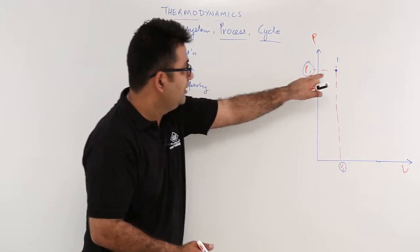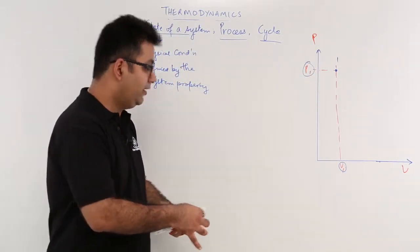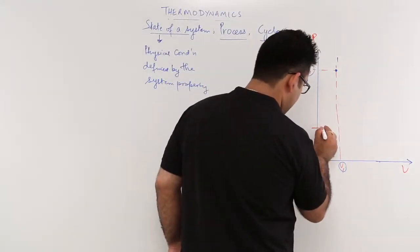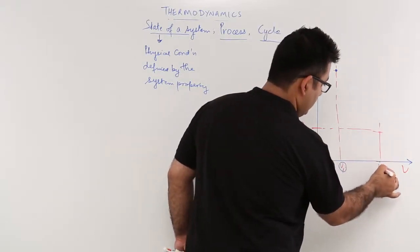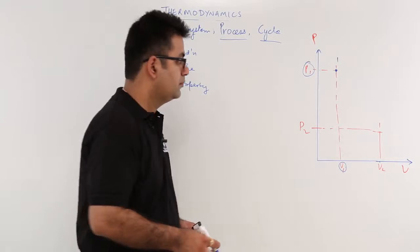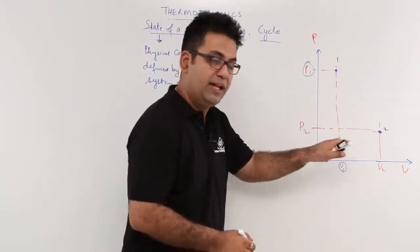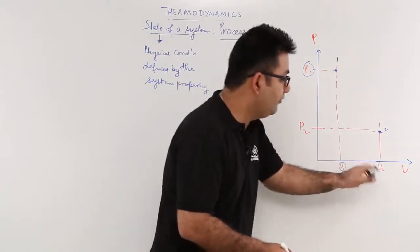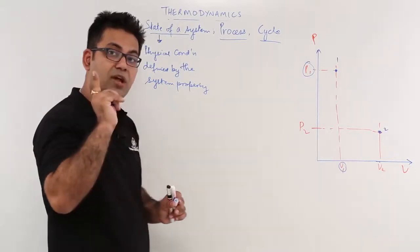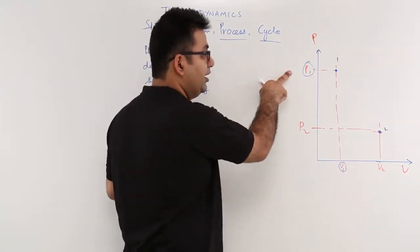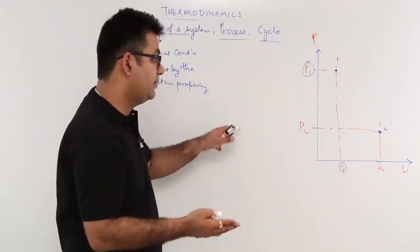That becomes the state of the system. Now, let me define one more state. Let me define this as P2 and volume V2. So this is state 2. At state 2, the pressure is P2 and the volume is V2. We are talking about a single system — this is one state of the system, and this is another state of the same system.